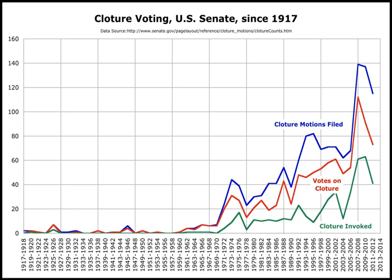In 1841, a defining moment came during debate on a bill to charter the Second Bank of the United States. Senator Henry Clay tried to end the debate via majority vote, and Senator William R. King threatened a filibuster, saying that Clay may make his arrangements at his boarding house for the winter. Other Senators sided with King, and Clay backed down. At the time, both the Senate and the House of Representatives allowed filibusters. Subsequent revisions to House rules limited filibuster privileges in that chamber, but the Senate continued to allow the tactic.